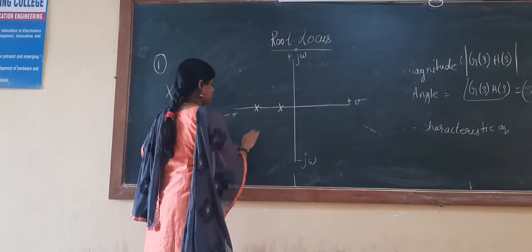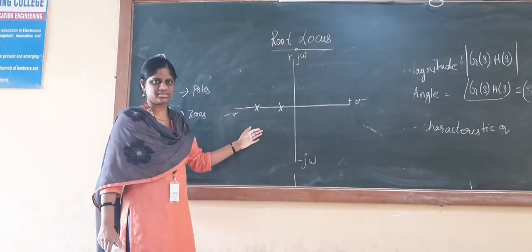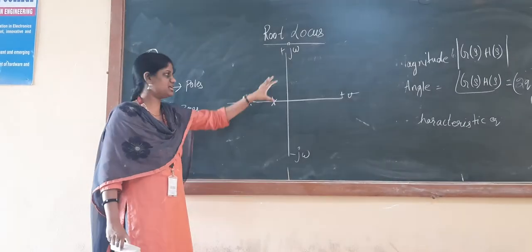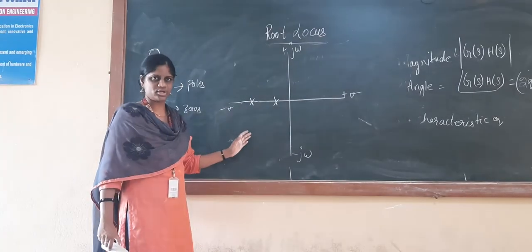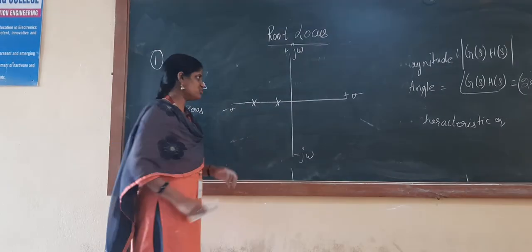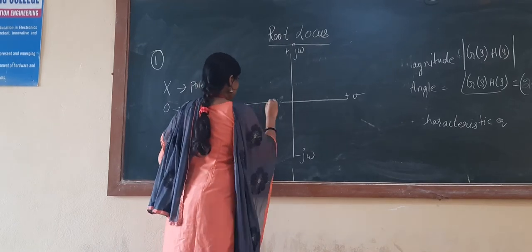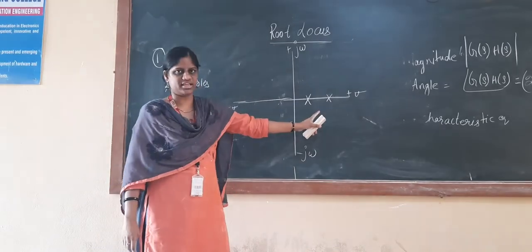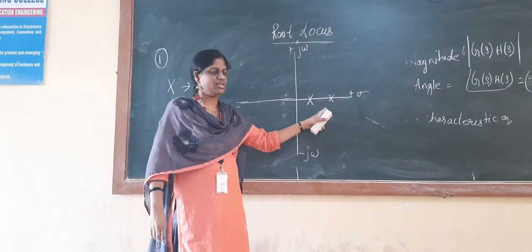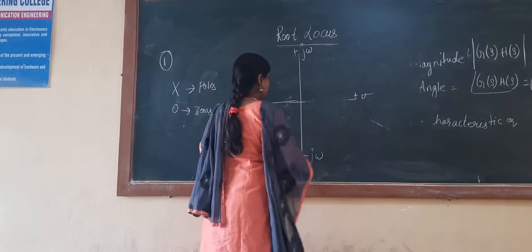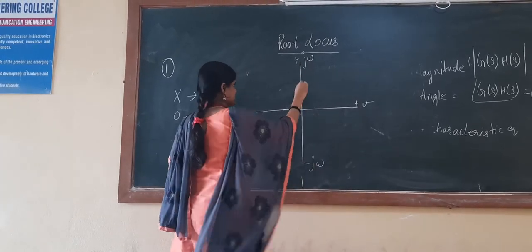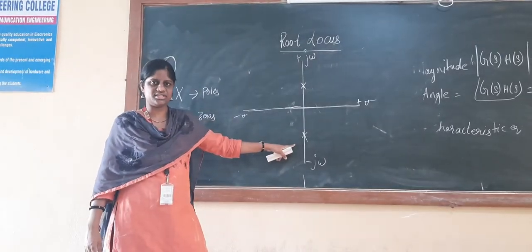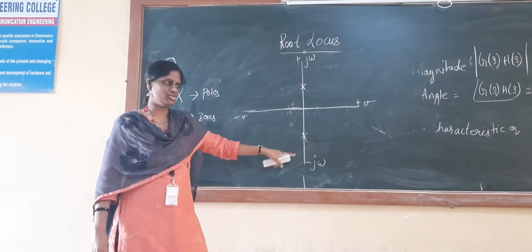If poles and zeros are located in the left half of the S-plane, then the system is a stable system. If your poles are located in the right half of the S-plane, then that particular system is an unstable system. These are the conditions you need to remember.